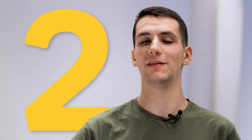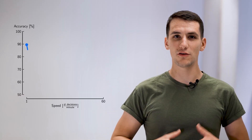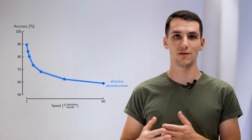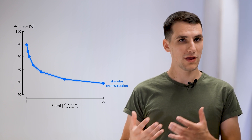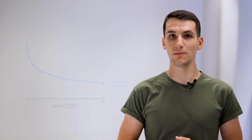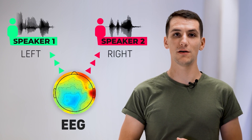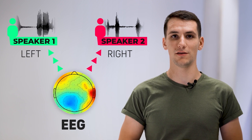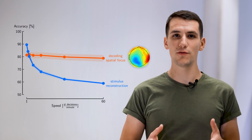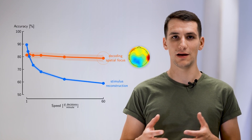However, this stimulus reconstruction algorithm suffers from two critical limitations. Firstly, the accuracy drastically drops when performing at high speed levels. To overcome this problem, we have developed a new AAD strategy by determining the spatial location of the attended speaker, solely from the EEG lateralization patterns. This drastically improves accuracy at high speed levels.